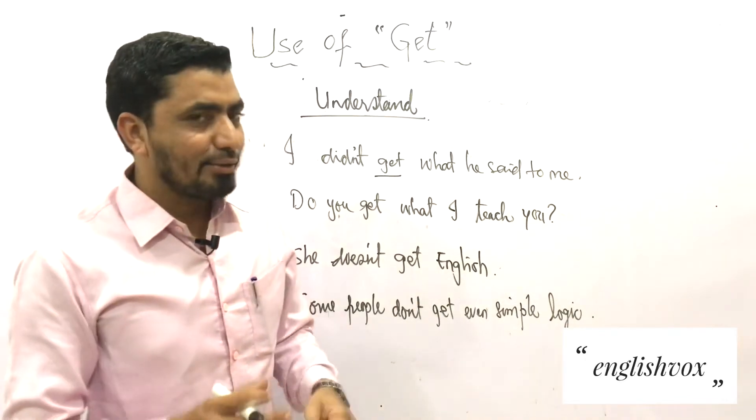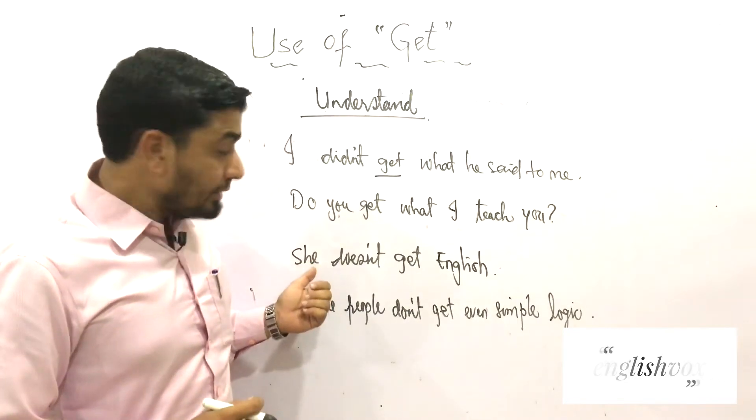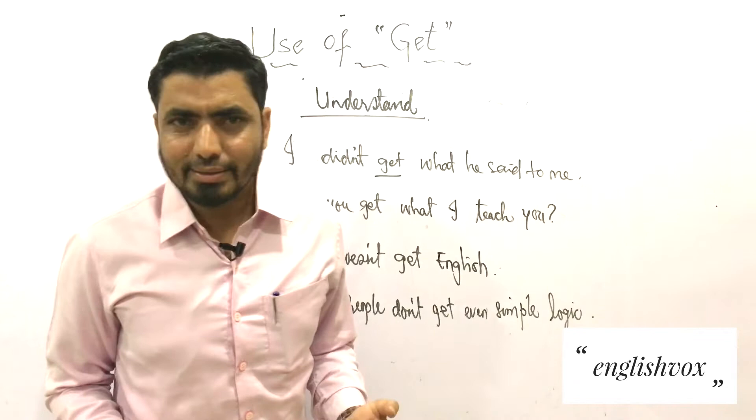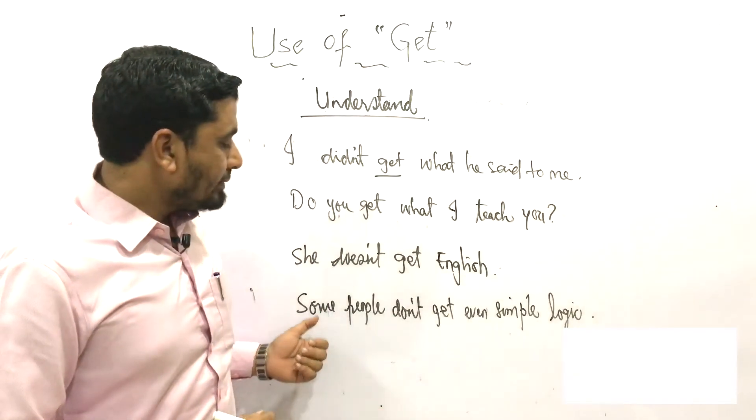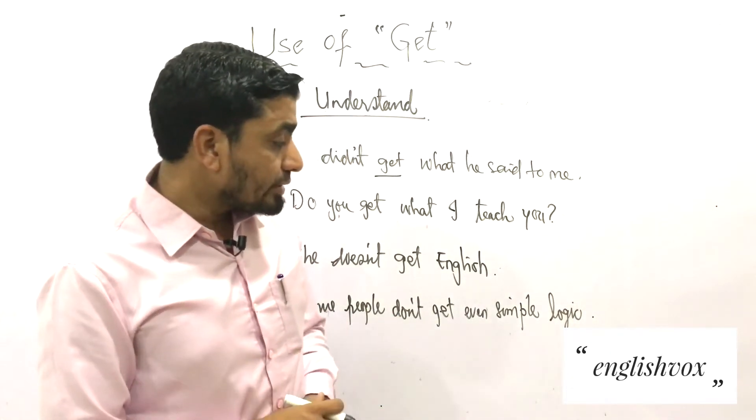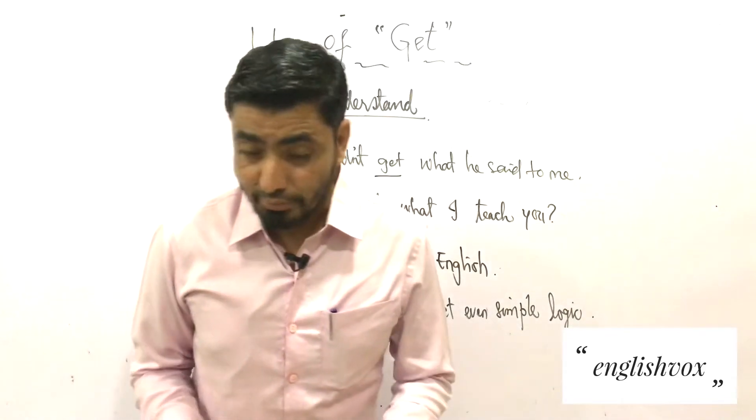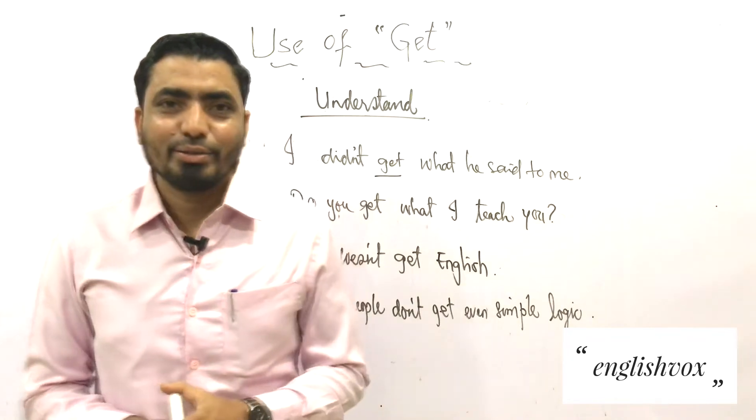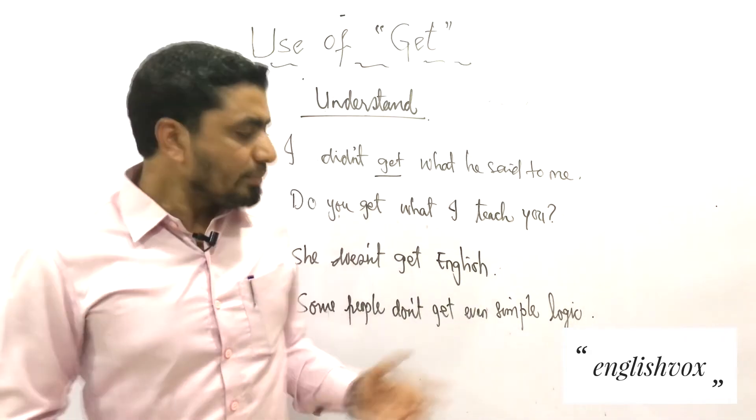The third example: 'She doesn't get English' means she does not understand English. And the last example: 'Some people don't get even simple logic'. This is a big problem - some people do not have common sense to get simple logic, which means they do not understand simple logic.